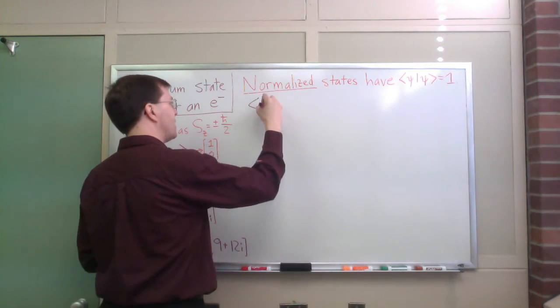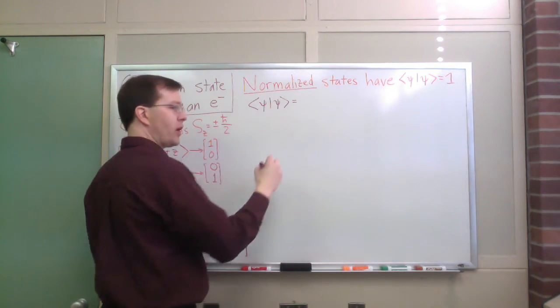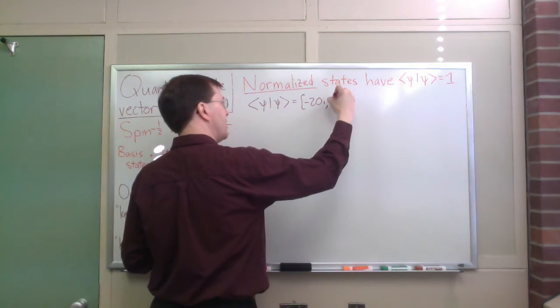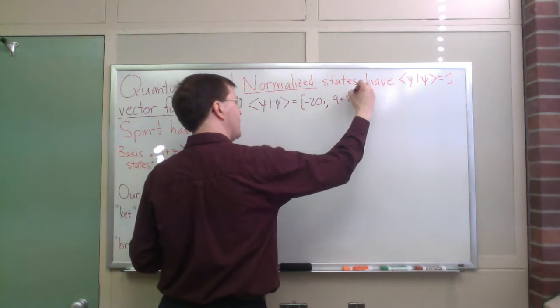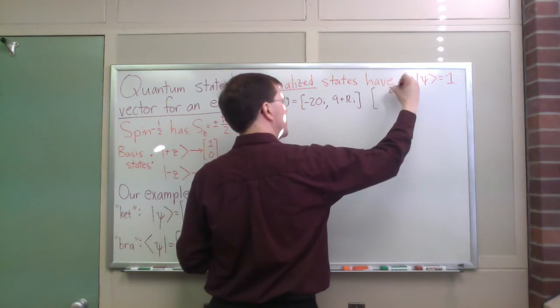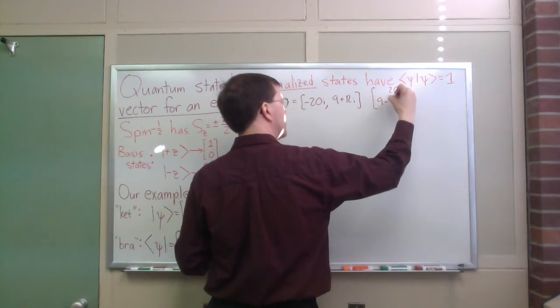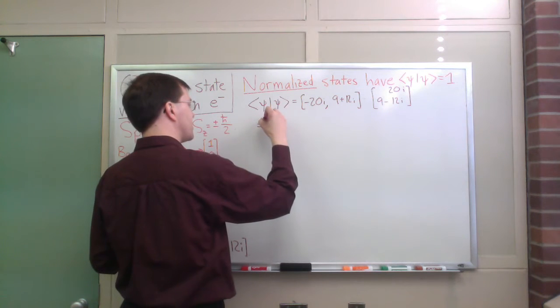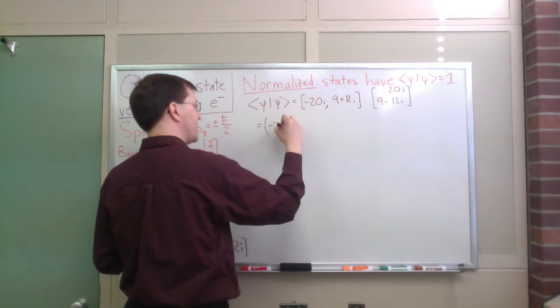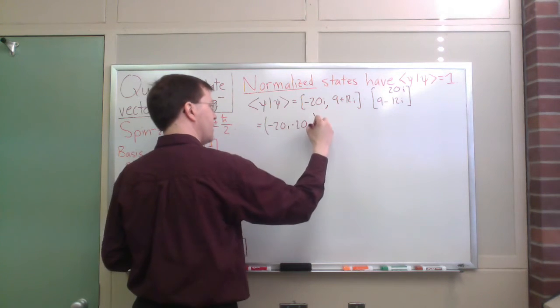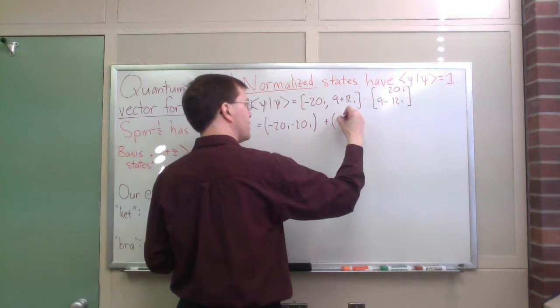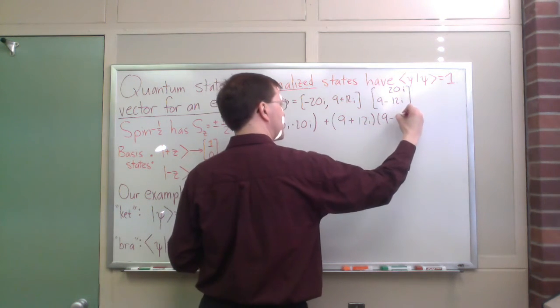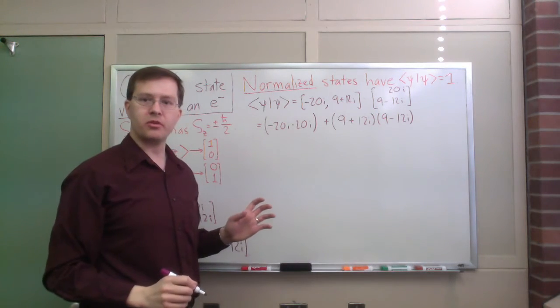The bracket of psi with psi is equal to, in our Sz representation, it's equal to the product of the two matrices: minus 20i, 9 plus 12i, times the matrix 20i in the first component, 9 minus 12i in the second component. That matrix product, I multiply the first two components, so minus 20i times 20i, plus multiplying the second two components, 9 plus 12i times 9 minus 12i. If you've done much with complex numbers, you already see where that's going.